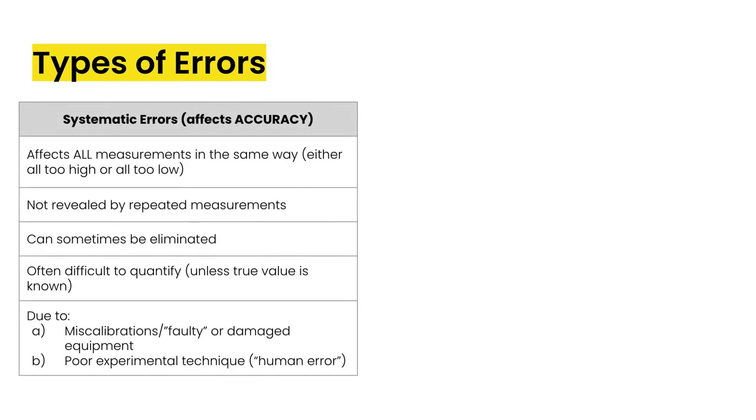There are two main types. The first is systematic errors. And these types of errors affect the accuracy of the experiment. So what this means is that it affects all measurements in the same way in that the measurements are either all too high or they're all too low.